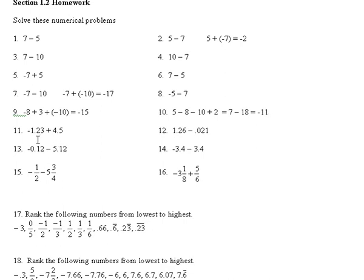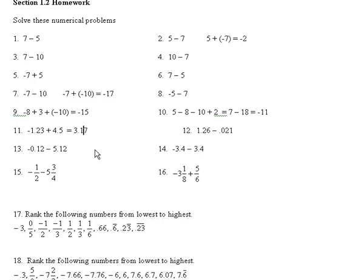These use the same rules, just practicing with decimals. We're adding a number that's bigger than this negative number, so the signs are different and we need to subtract. 4.5 minus 1.23 — line up the decimal point — gives 3.27. It's positive because we're adding on a number bigger than the negative 1.23, taking us up to the positive. The sign of the larger number is positive, so the answer is positive 3.27.